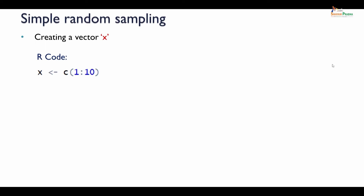Let us see how to do that in R. First I am going to illustrate the sampling technique using a toy example so that it will be easier for us to understand when we work with a larger dataset. I am going to create a vector called x by combining the values from 1 to 10. When I print x I can see the values from 1 to 10.